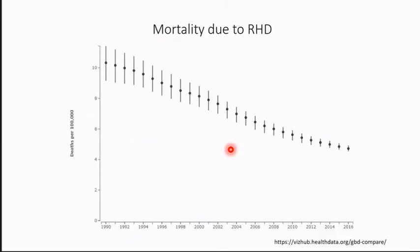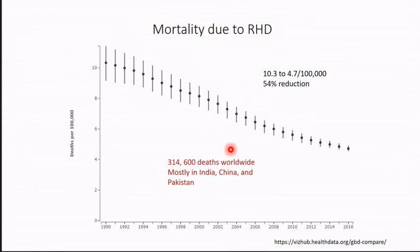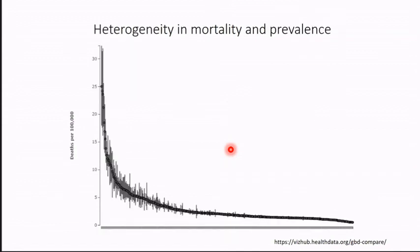This is data from the IHME which you can get from their website — mortality due to RHD over the last 25 years, and you'll see it has been gradually reducing. There's been a 50% reduction, but most deaths still occur in three or four countries — mainly India, China, Pakistan, and the Congo or Indonesia. There is enormous heterogeneity in mortality and prevalence; you'll see there is a very high mortality in the Solomon Islands but practically nothing in a developed country like Singapore. Most of the disease is present in just a handful of countries — about 20 LMICs have very high prevalence of RHD.